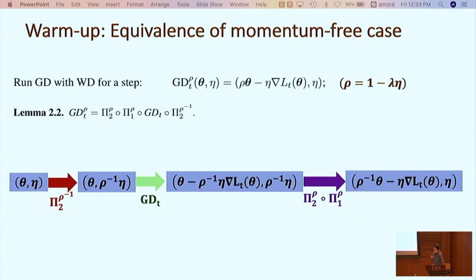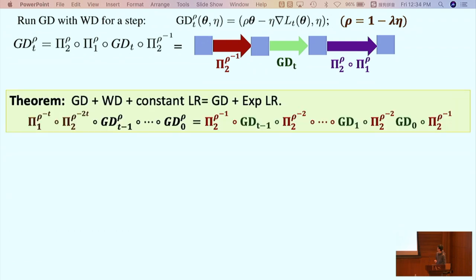To simplify notation, we define these following maps. We call the pair theta, eta, a state of the training algorithm. We view each step of the training algorithm as a mapping from a state to another state. We call this Pi1c and Pi2c squared equivalent scaling, because it will not change the current network in function space, and it will not change the future network in function space after a sequence of GD updates.